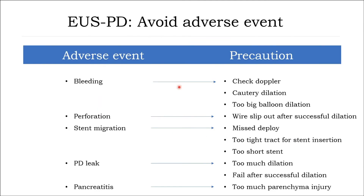To avoid adverse events: minimize bleeding by checking Doppler signal; use pure cut for the cautery dilator; avoid too large balloon dilation; keep the guidewire in a stable position to avoid guidewire perforation. To minimize stent migration: ensure adequate dilation of the tract, careful stent insertion, proper stent selection in terms of size and length, avoid misdeployment, and avoid excessive balloon dilation. To minimize pancreatic leak and parenchymal puncture: keep the dilated MPD close to the probe.